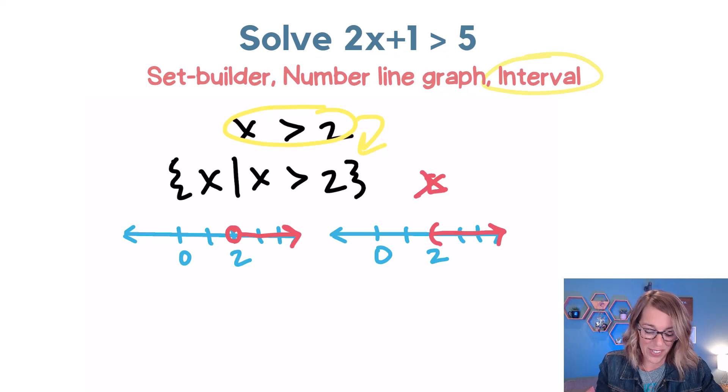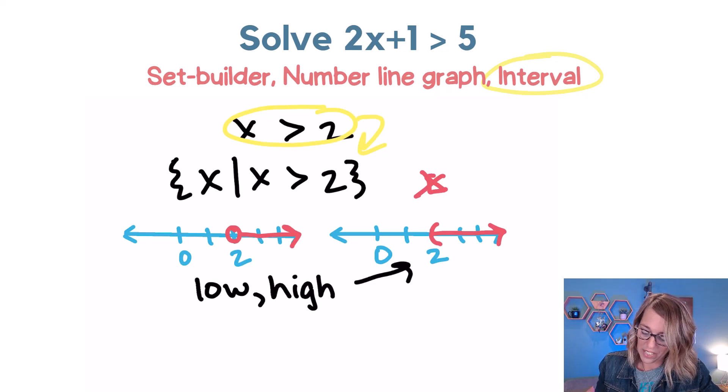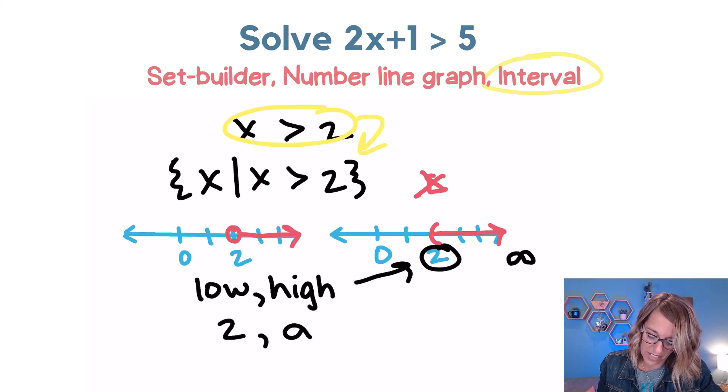Next we've got interval notation. And for interval notation, I need my lowest value, comma, my highest value. Let's go over here. My lowest value is 2 and my highest value, well it goes on forever, so that's going to be infinity. So I can write 2, comma, infinity.